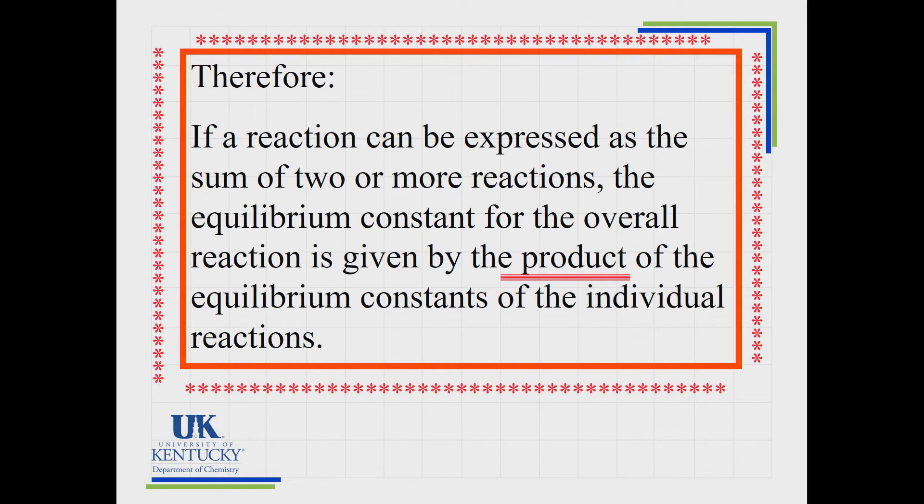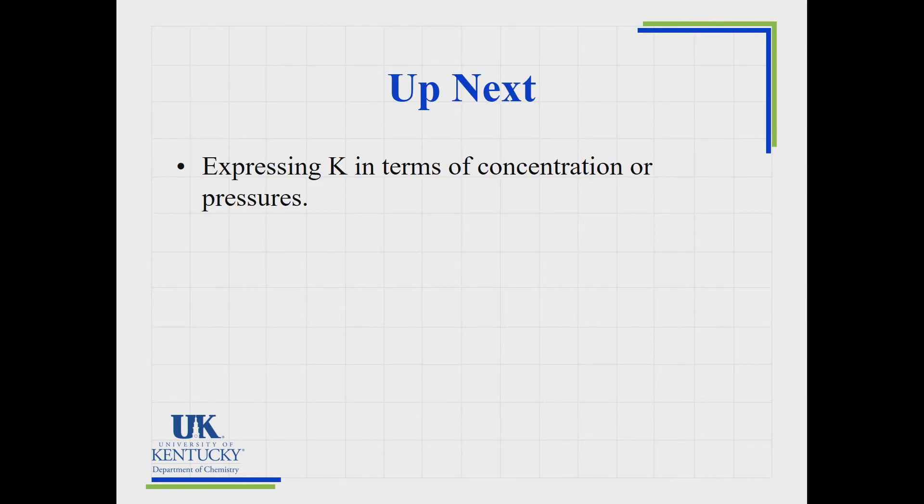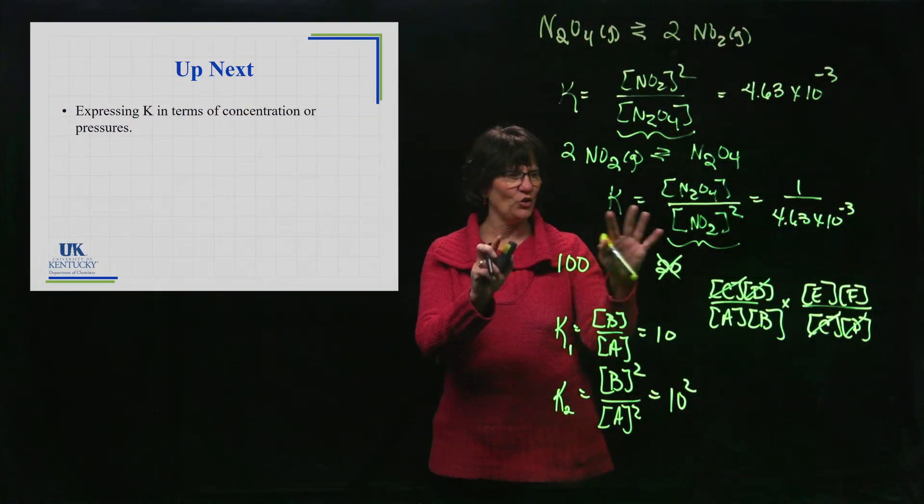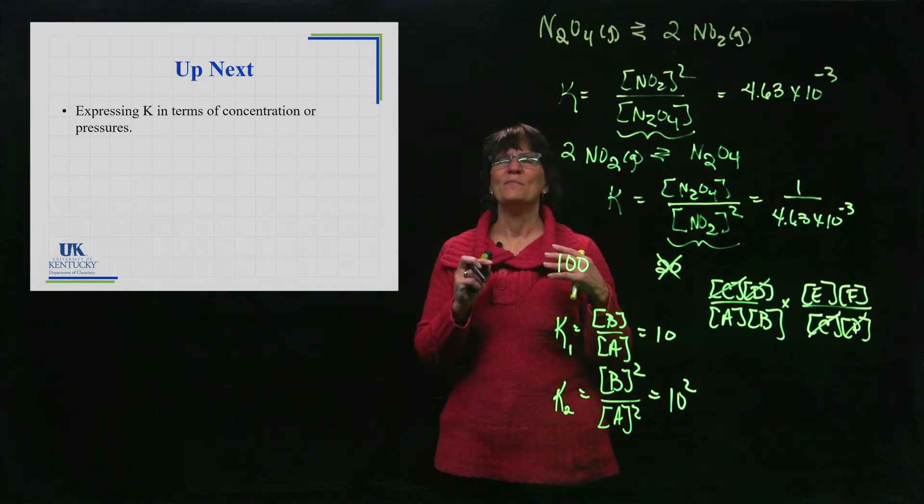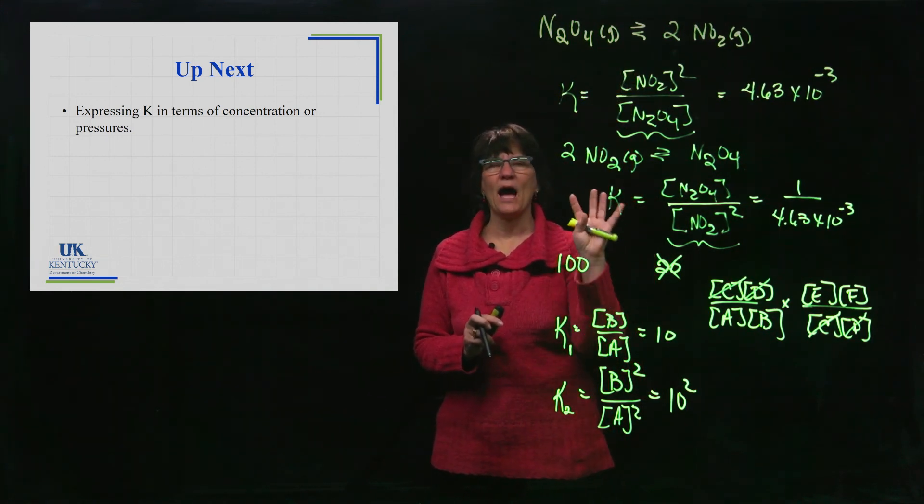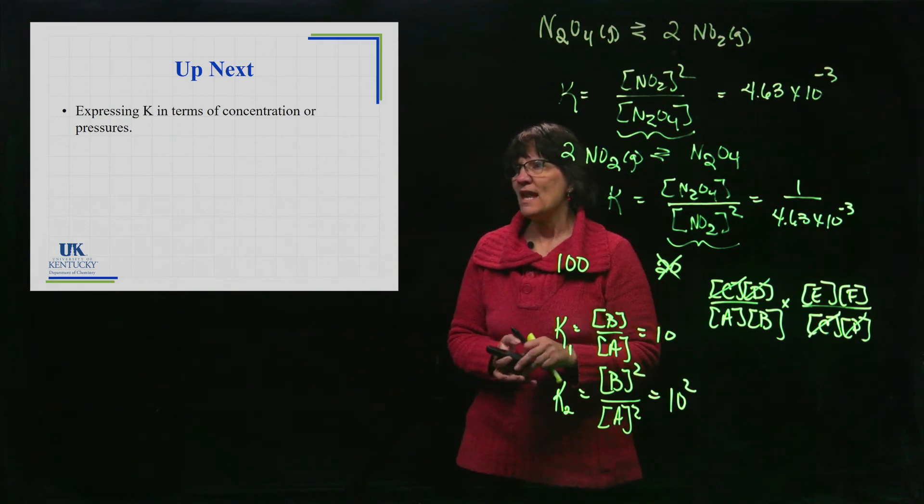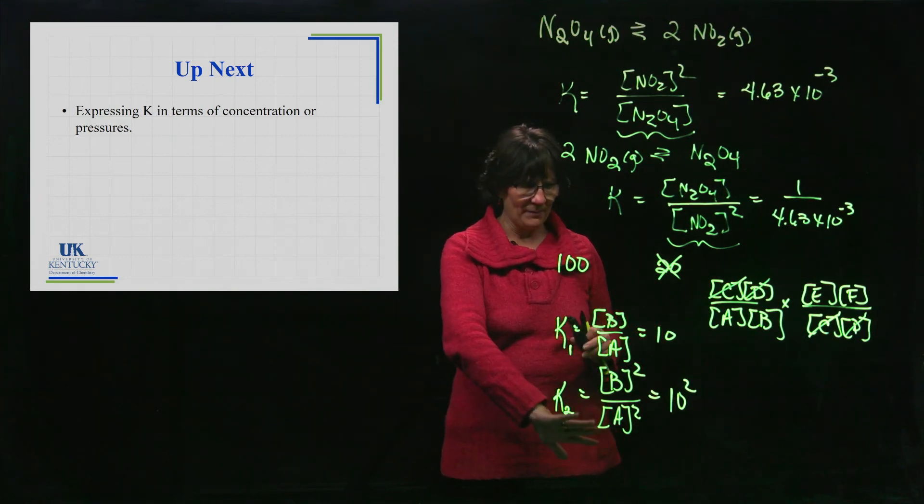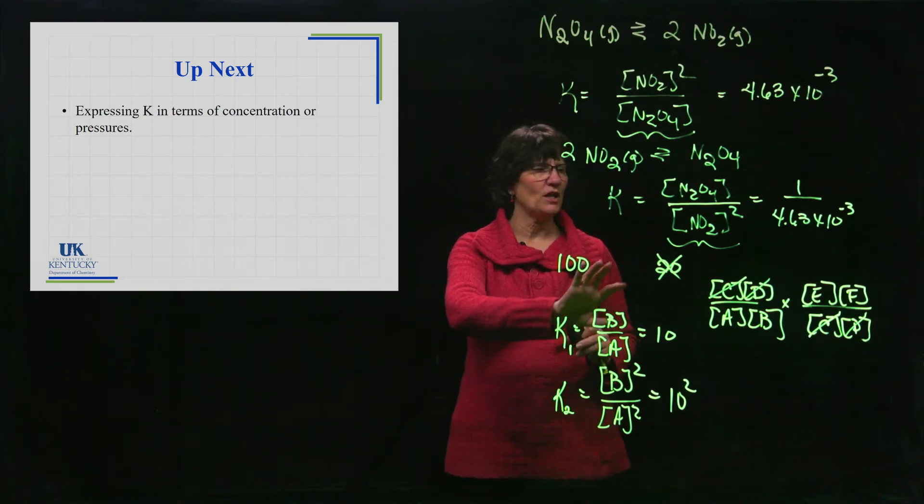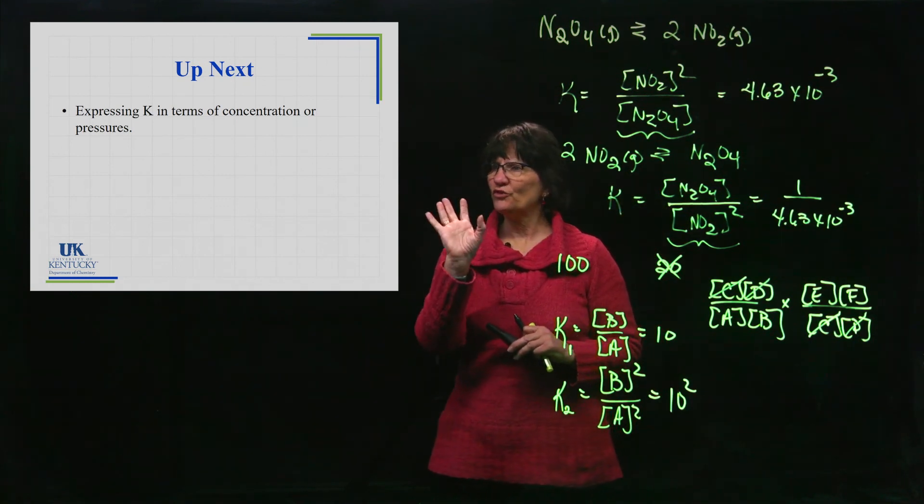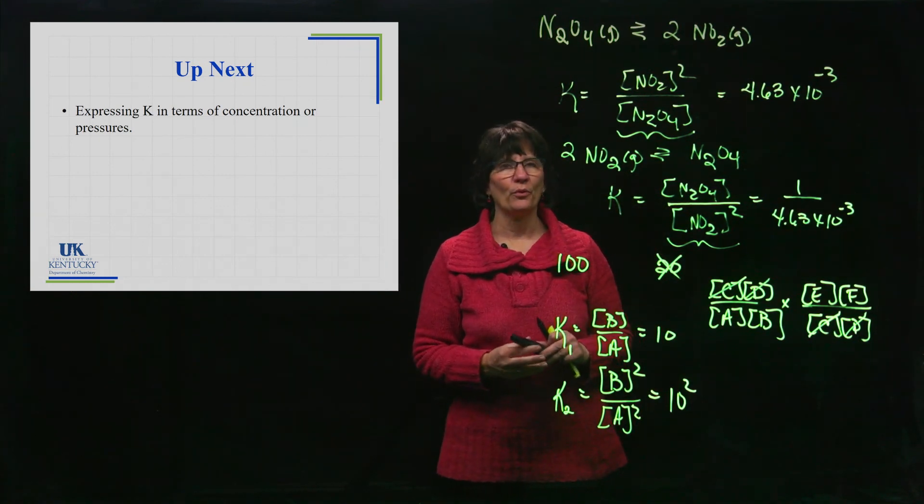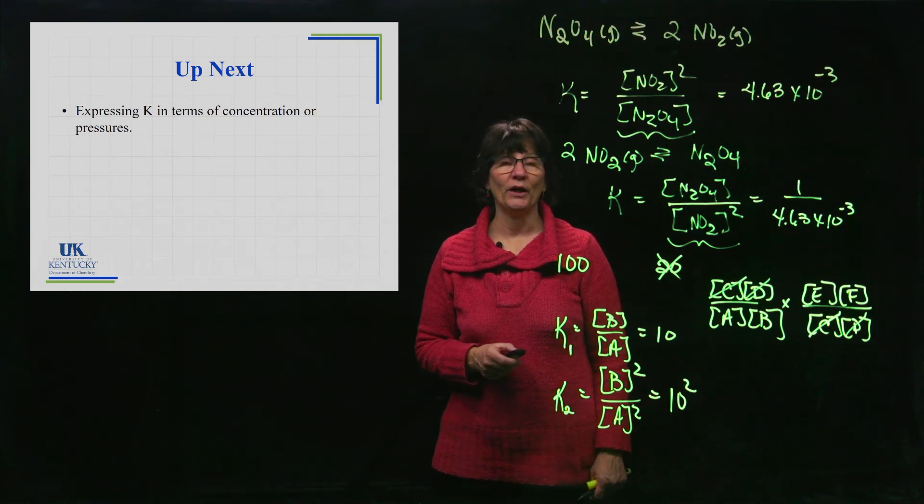So we're going to put little stars around it to try to remember that. You're going to do something in your notes to try to trigger in your mind that that's what is going on when you can add equations together. You're going to be practicing with that, doing assignments where you'll practice manipulating those numbers. I've given you the overall concept of manipulations with equations and how it affects the K values. Now we're going to see that I've been writing it in terms of concentration and this is always molarity. You can do similar work with pressures, so that's what we will do in our next lesson.